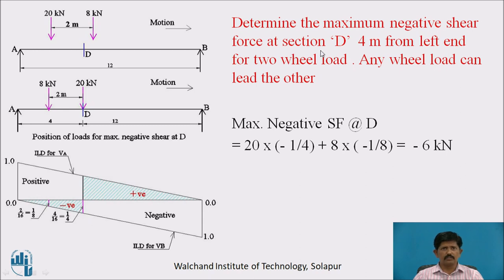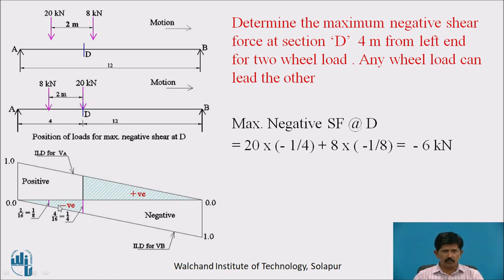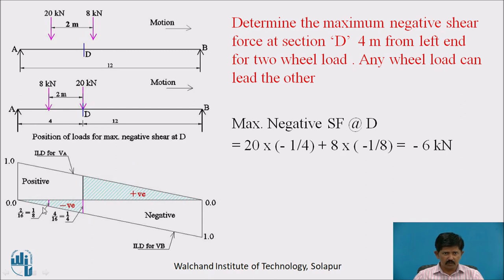To determine the maximum negative shear force at section D for the same 2 wheel loads at 4 meters from the left end: observing the ILD, the AD portion gives negative values and the DB portion gives positive values. For maximum negative shear force, the wheel loads should be in the AD portion, with the heavier load exactly at or just left of point D (taken at D for calculation). Maximum negative shear force at D = 20 × (−1/4) + 8 × (−1/8) = minus 6 kilo Newton.